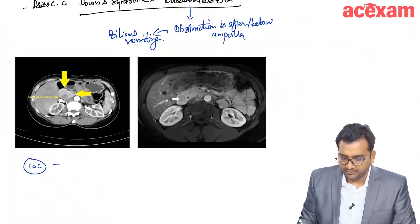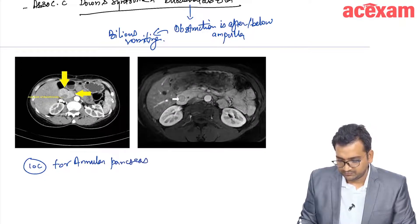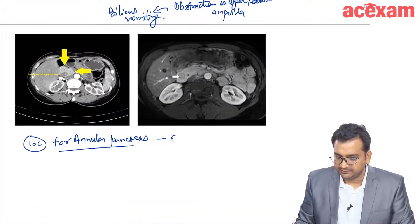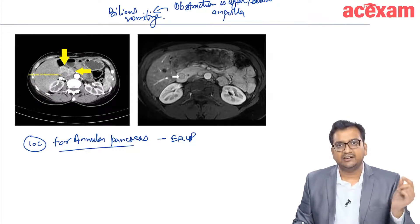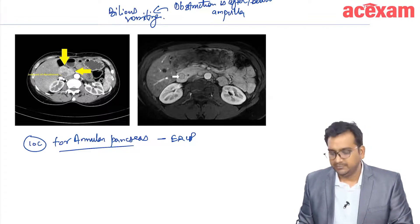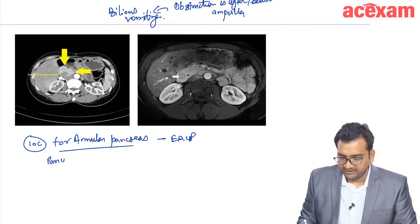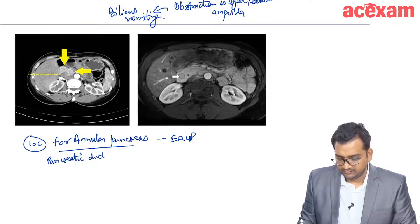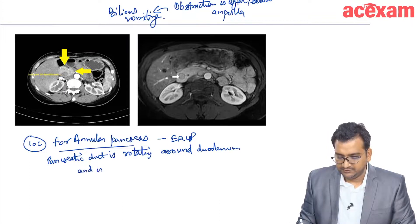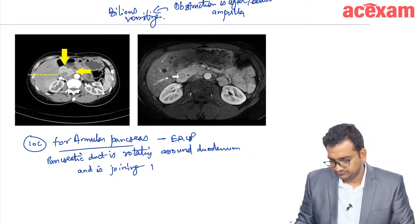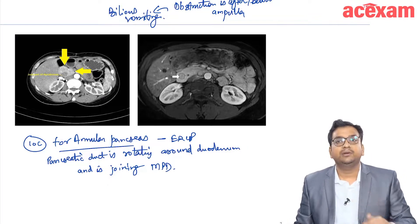The investigation of choice for annular pancreas is ERCP. What we see in ERCP is a pancreatic duct which is rotating around the duodenum and is joining the main pancreatic duct. So a pancreatic duct rotating around the duodenum and joining the main pancreatic duct — this is how we are able to diagnose annular pancreas.